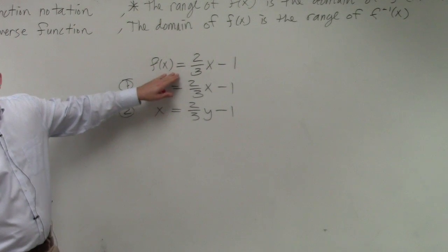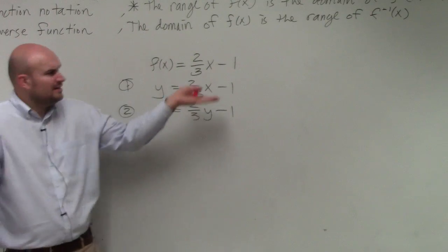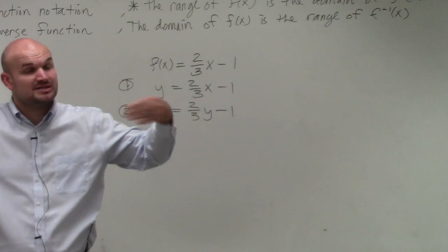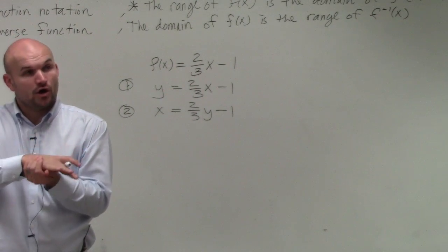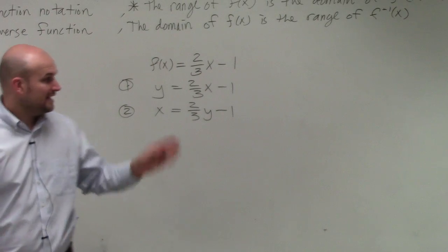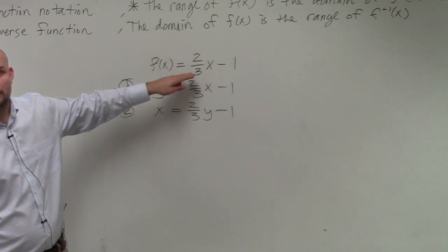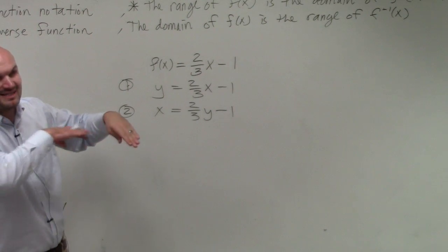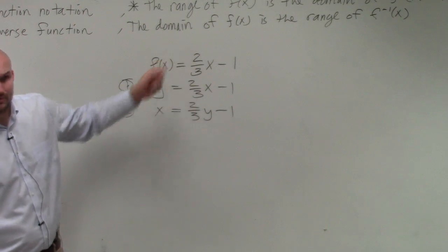Do we know what the domain is of this function? No. Well, all real numbers. Why? Because, again, remember the restriction. The implied domain is all real numbers, except for our two restrictions. You can't divide by 0, or you can't take the square root of a negative number. Is it possible for us to divide by value that's going to make it 0? No. There's no fraction there, right? I mean, there's a fraction 2 3rds, but there's no x in the denominator. Is there any square roots?